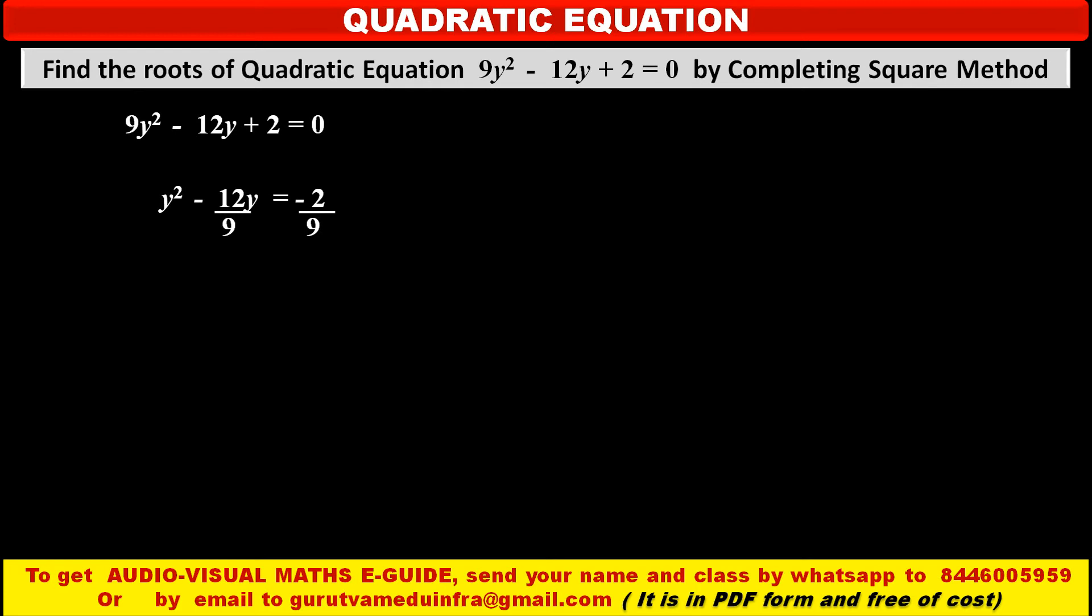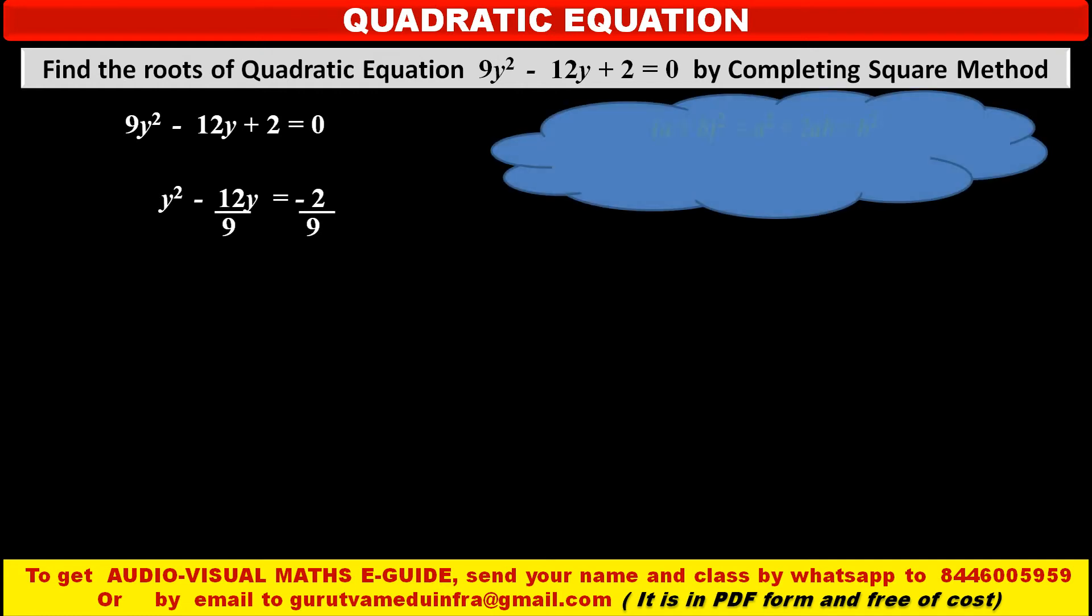Now friends, we have to apply one identity. As you know, (a + b)² expansion is a² + 2ab + b². If we rewrite it by changing the side then we get a² + 2ab + b² = (a + b)².